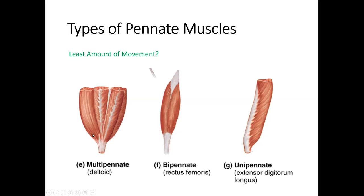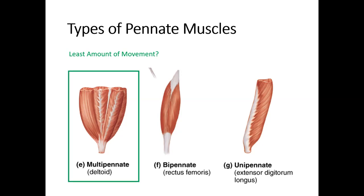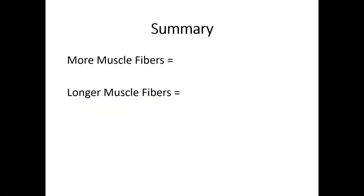Of these three types of pinnate muscles, which would have the shortest muscle fibers and therefore the least range of movement? Multipinnate — because it has several central tendons, the muscle fibers are shortest, giving the least amount of movement. To summarize: increasing the number of cells means more power or force. Longer cells mean a greater distance of shortening, which creates more range of motion. So more fibers equals more force; longer fibers equals more movement.